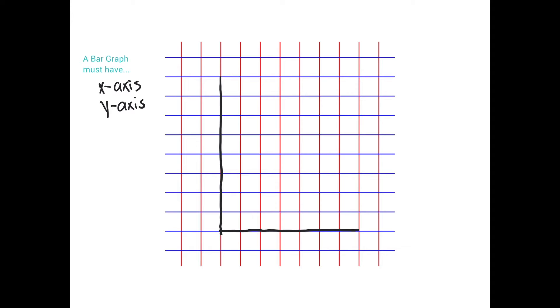This right here is called the y-axis. This right here is called the x-axis. You've also probably heard this called the vertical axis and this has also been called the horizontal axis. Get used to calling it x and y-axis moving forward.